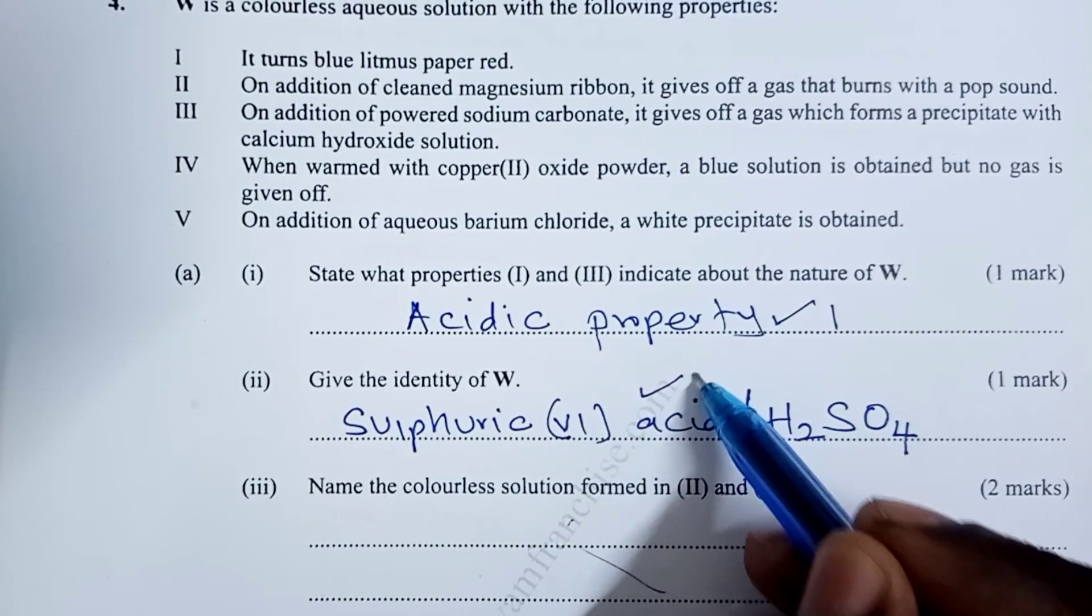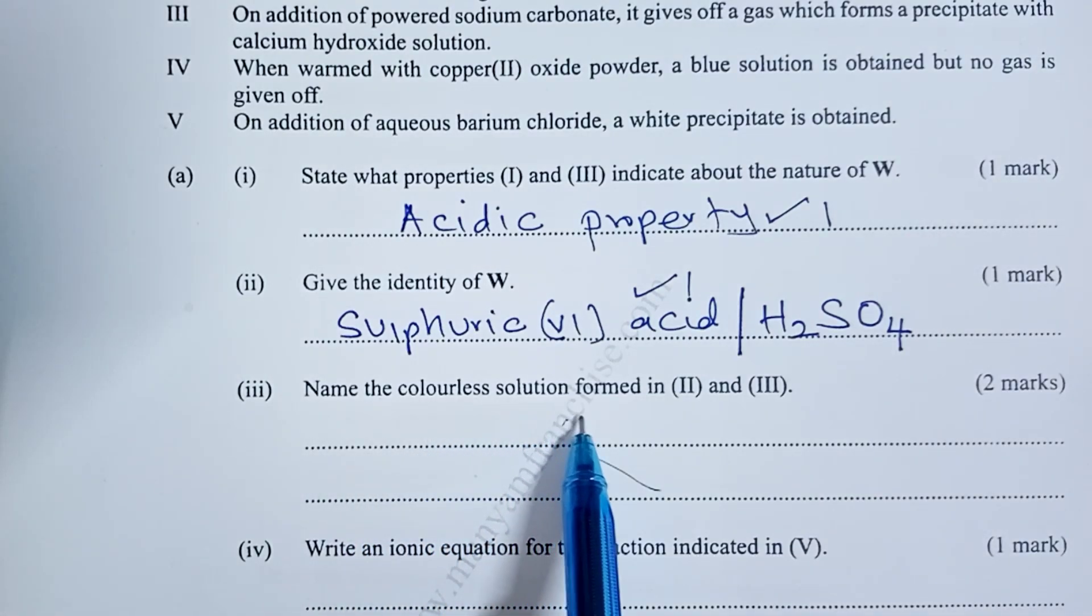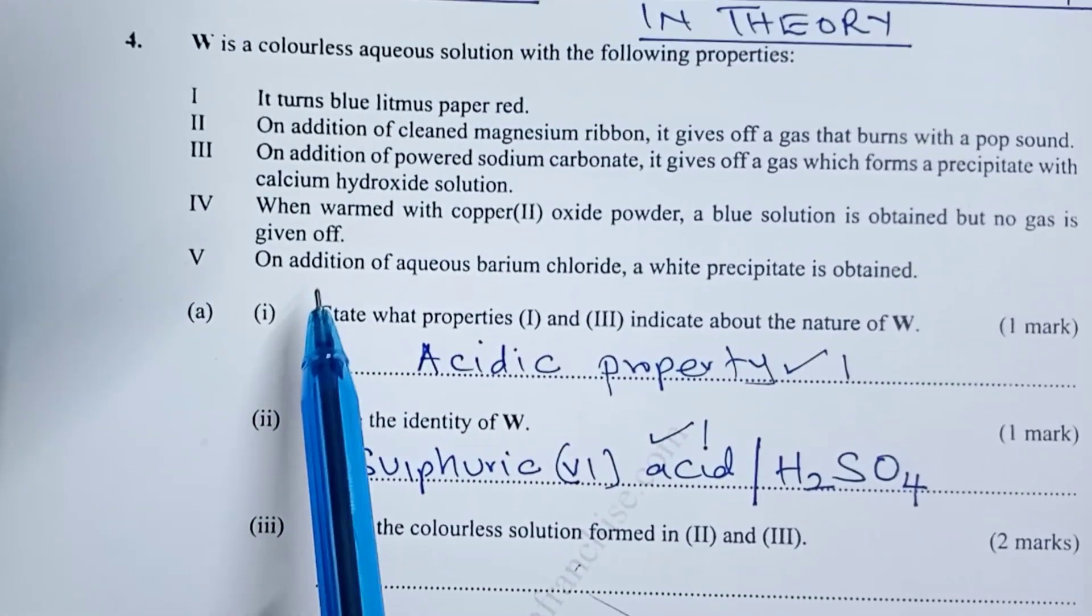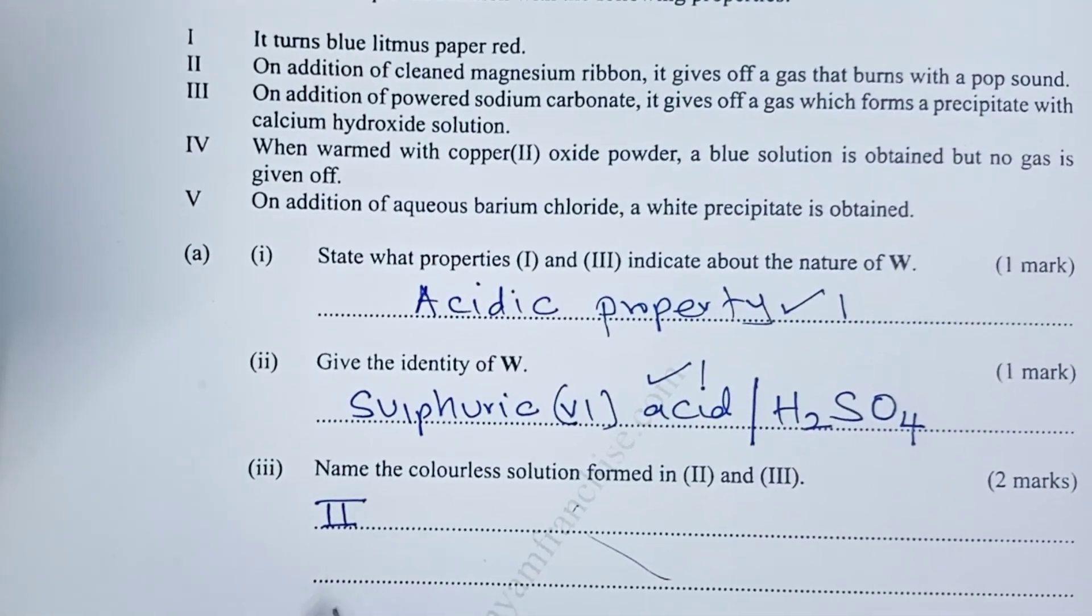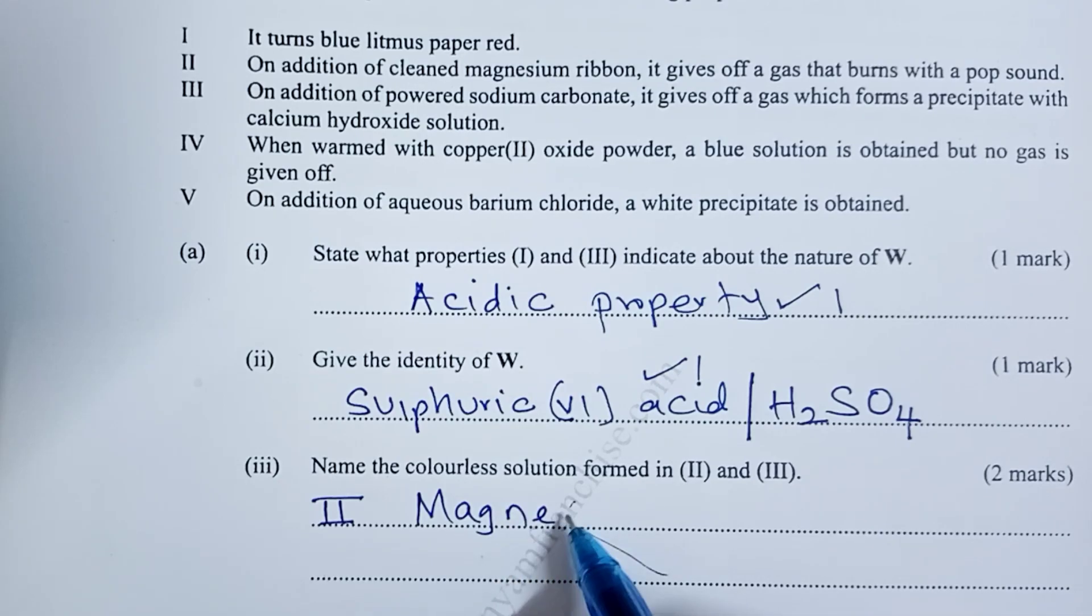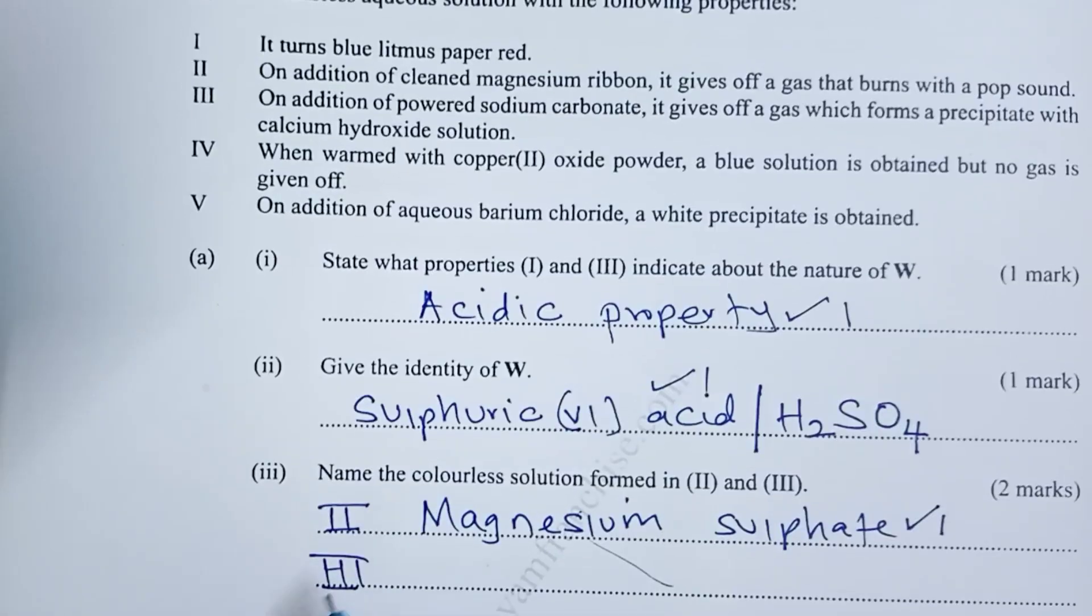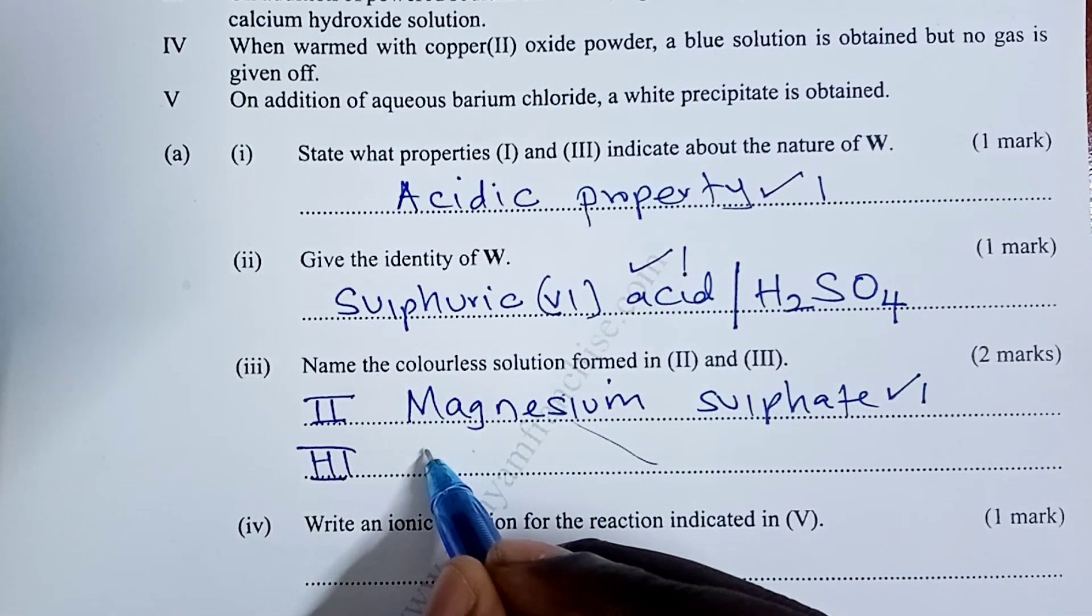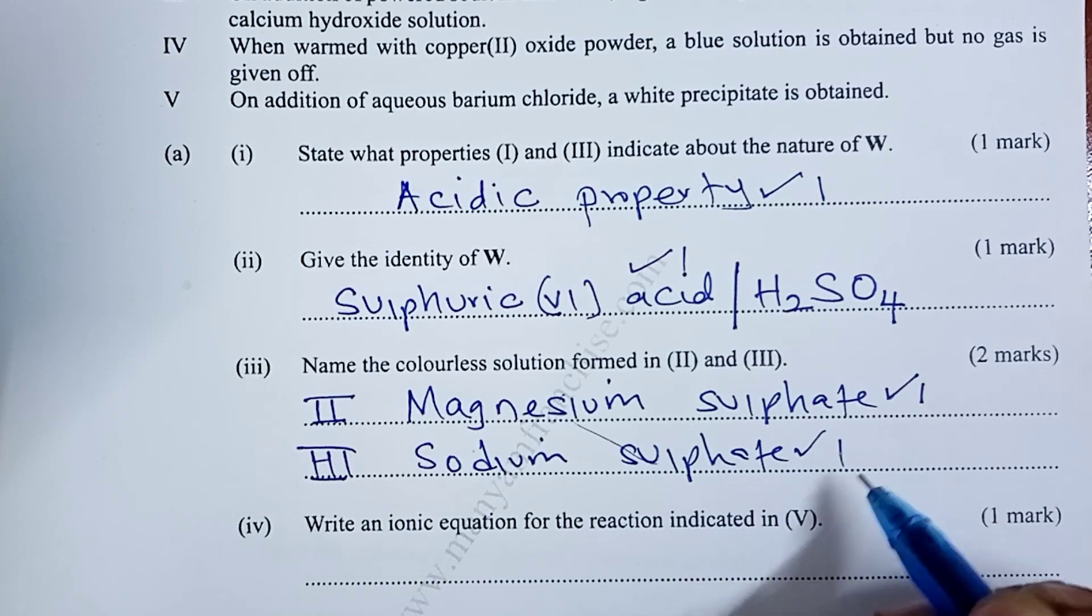Now name the colorless solution formed in 2 and 3. So in 2, we are adding cleaned magnesium ribbon to sulfuric acid. So what we are forming here is simply magnesium sulfate for one mark. And for part 3, we are adding powdered sodium carbonate. So what we are forming as the reaction proceeds is simply sodium sulfate for the other mark.